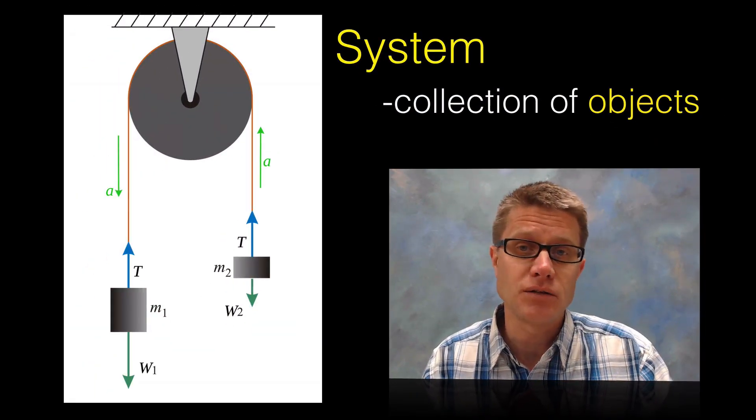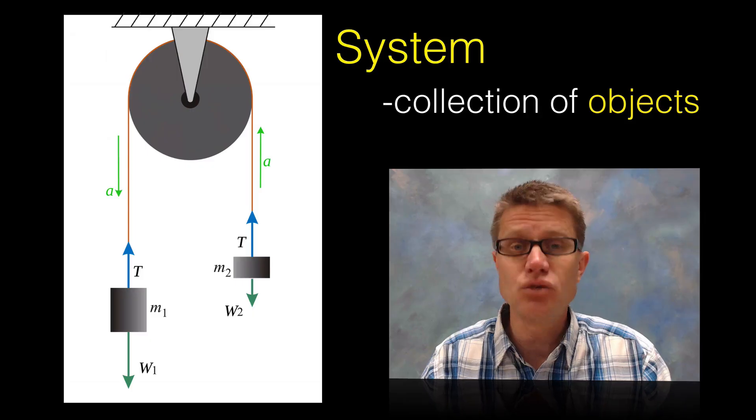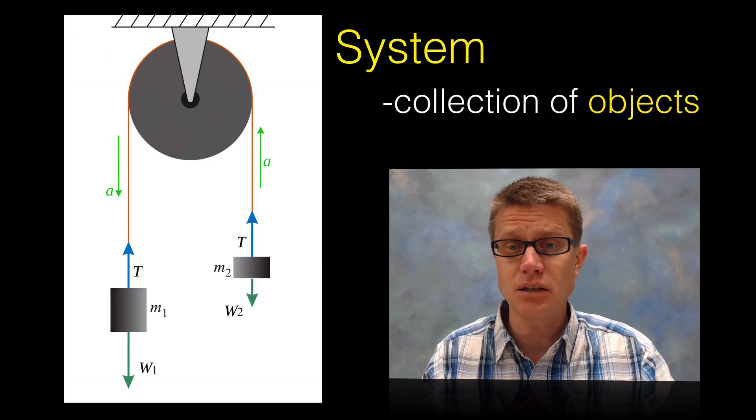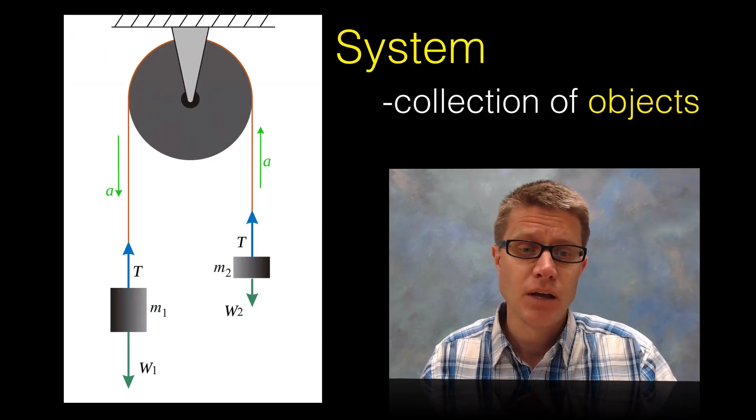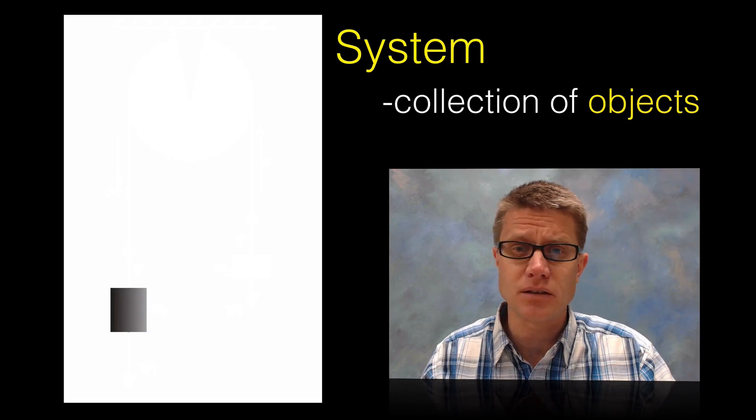And so a system is a collection of different objects. And so this Atwood machine here is made up of two weights and then it is made up of a pulley. And so we can treat that as a system. And each of those weights is treated as an individual object. But if we were to zoom in to that one weight that also can act as a system.